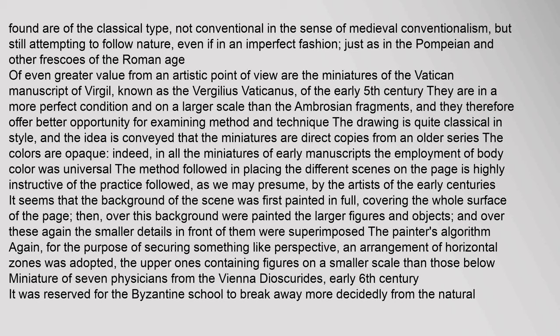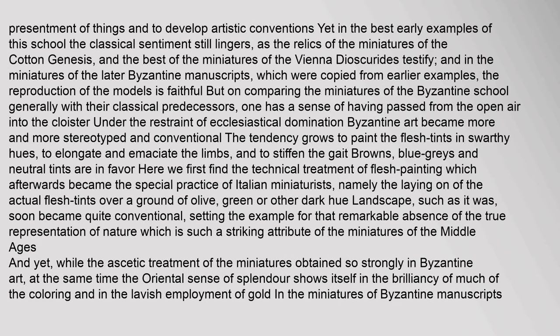Miniature of seven physicians from the Vienna Dioscurides, early 6th century. It was reserved for the Byzantine school to break away more decidedly from the natural presentment of things and to develop artistic conventions. Yet in the best early examples of this school the classical sentiment still lingers, as the relics of the miniatures of the Cotton Genesis and the best of the miniatures of the Vienna Dioscurides testify. In the miniatures of the later Byzantine manuscripts, which were copied from earlier examples, the reproduction of the models is faithful. But on comparing the miniatures of the Byzantine school generally with their classical predecessors, one has a sense of having passed from the open air into the cloister under the restraint of ecclesiastical domination.